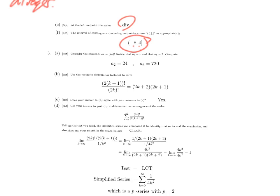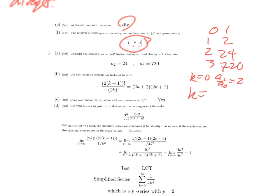Question 3 takes a look at (2k) factorial. For k equals 0 it's 1, for 1 it's 2, for 2 it's 24, for 3 it's 720 — after that it gets very big. This asks what happens when you divide one from the next. When k equals 0, we get a1 over a0, which is 2. When k equals 1, we get a2 over a1, which is 12. When k equals 2, we get a3 over a2, which is 720 over 24, which is 30. And if you went further you got 56.